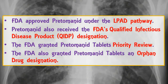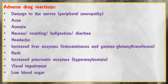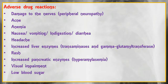The most common adverse reactions observed in patients treated with pretomanid in combination with bedaquiline and linezolid included peripheral neuropathy, acne, anemia, nausea, vomiting, indigestion, diarrhea, headache, increased liver enzymes, rash, increased pancreatic enzymes, visual impairment, and low blood sugar. This combination should not be used in patients with hypersensitivity to bedaquiline or linezolid.